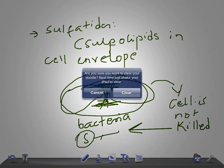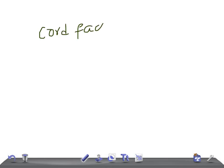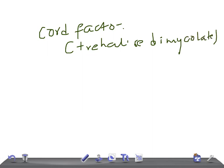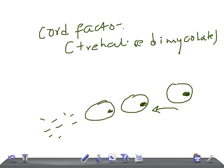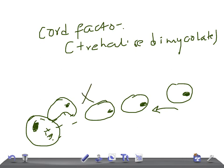Now let's move on to the cord factor. Cord factor is trehalose dimycolate. This inhibits leucocyte migration. Normally, leucocytes would migrate to the site of infection, engulf the bacteria, and begin killing them — this is what happens in a person with a good immune response. But the cord factor of Mycobacterium tuberculosis inhibits this leucocyte migration.